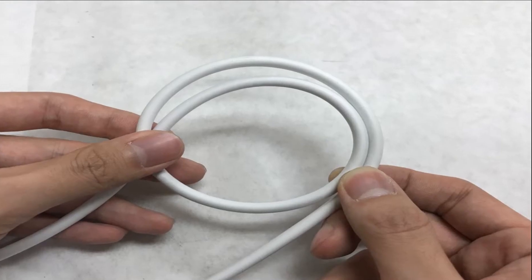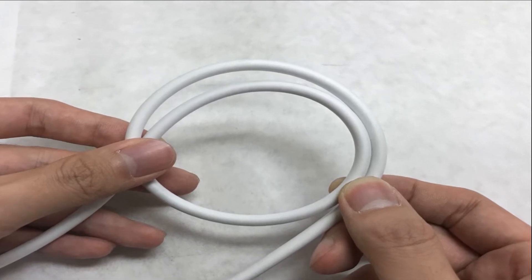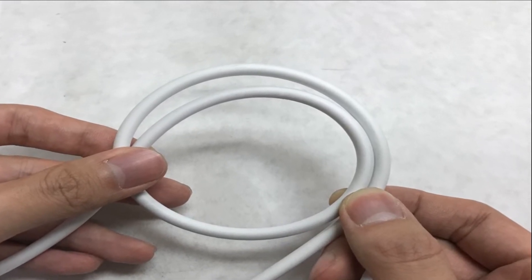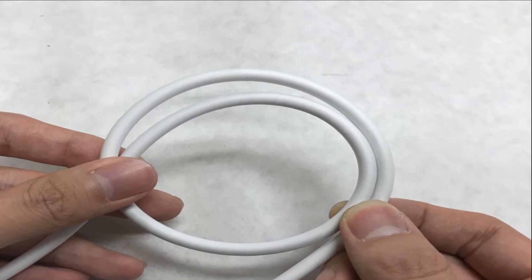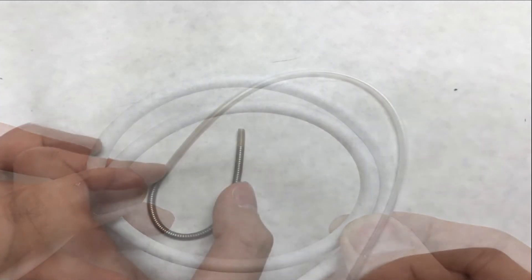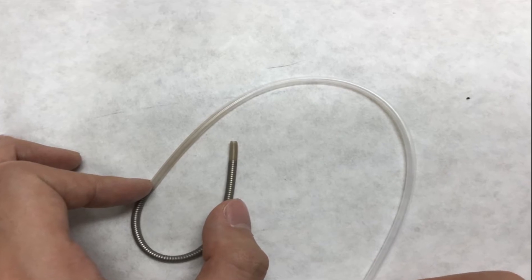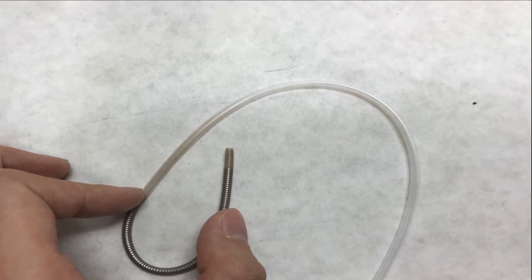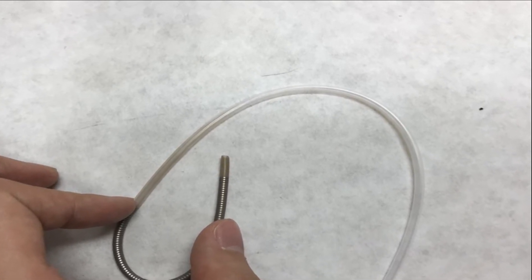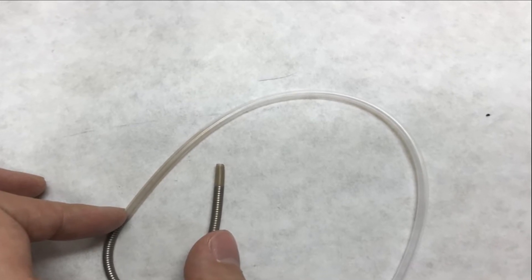The first factor is flexibility. For example, a 3.7 mm channel for colonoscopies needs to be able to bend 180 degrees in a radius of 25 mm. Different models require different levels of flexibility as well. Smaller models, for example, need to be able to bend up to 275 degrees in a 20 mm radius.